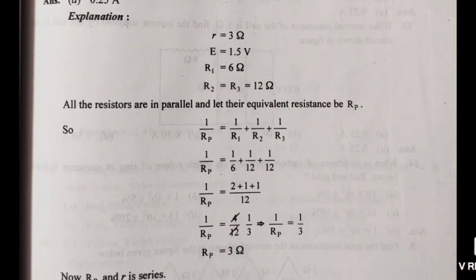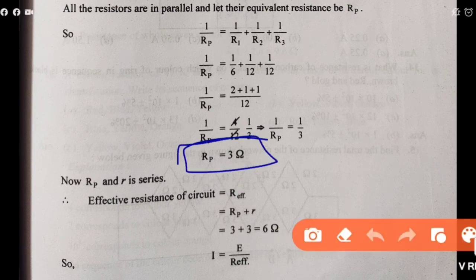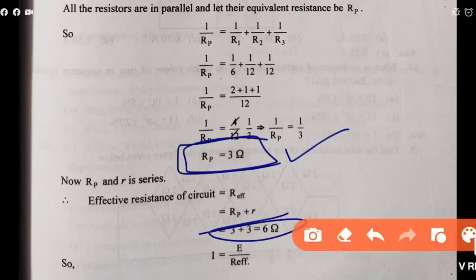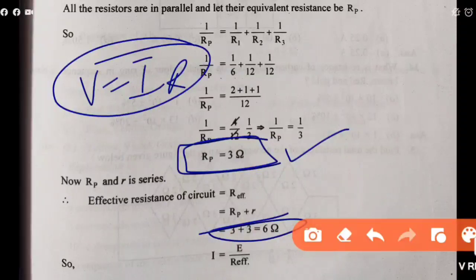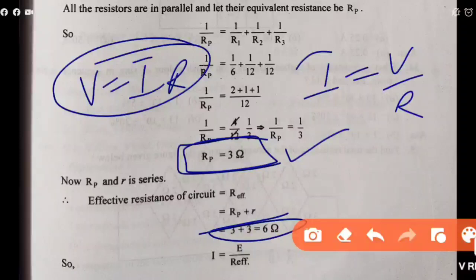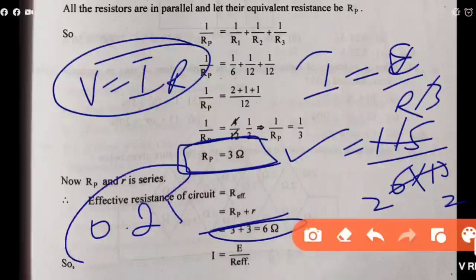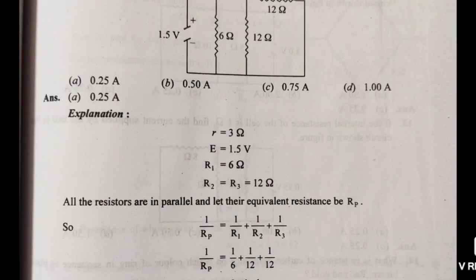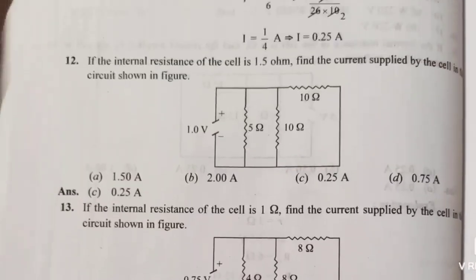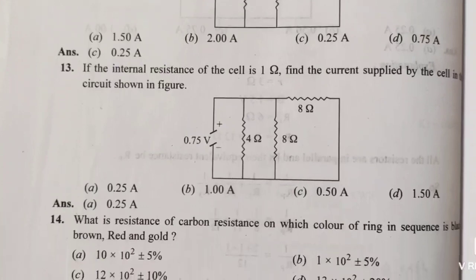Total resistance = external (Rp = 3) + internal (r = 3) = 6 ohm. Current I = V/R = E/R_total = 1.5/6. Remove decimal: 15/60 = 1/4 = 0.25 ampere. So 0.25 A is the final answer, which is option A. Question numbers 12 and 13, try yourself. Question 14 is also important.